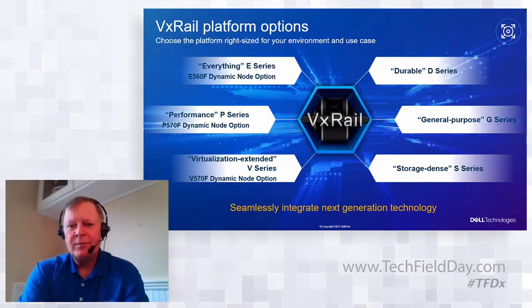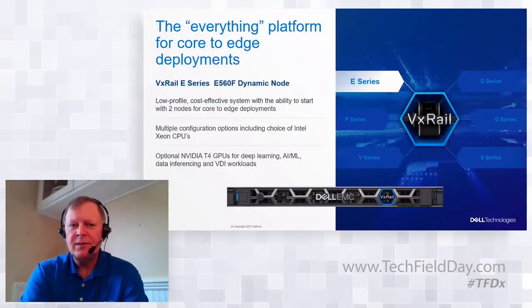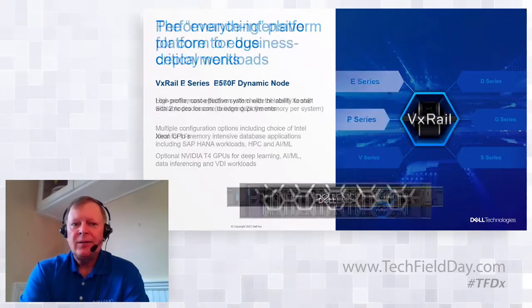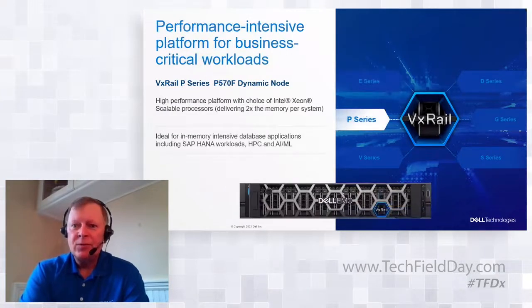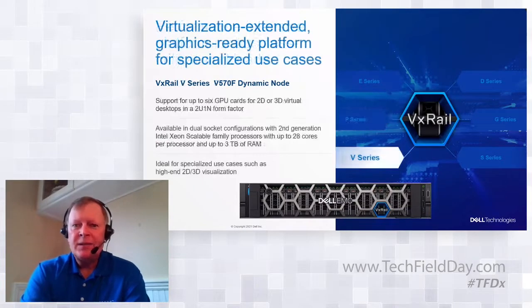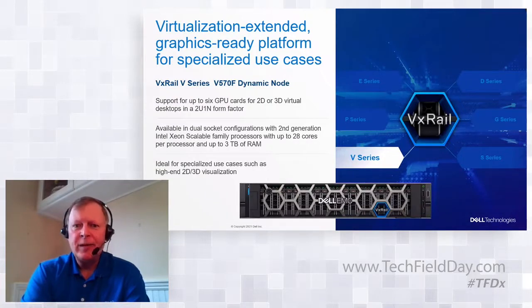We have multiple different platform options: the E-Series, the P-Series, and the V-Series. The E-Series is our low-profile, cost-effective 1U platform for core-to-edge deployments. We have the 570F, which is our performance-based server platform for heavy workloads and databases. And our V-Series, which is our virtualization platform geared towards 2D or 3D visualization or VDI-type applications.